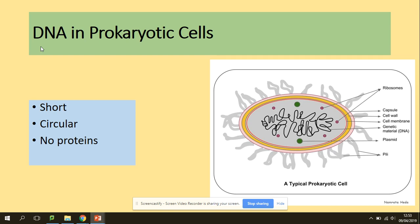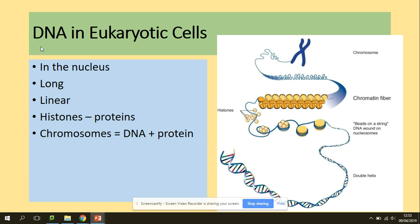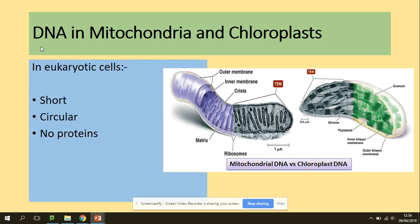Differences between DNA in prokaryotic and eukaryotic cells: in a prokaryotic cell, DNA is short, circular, and does not have histones. In a eukaryotic cell, DNA is found in the nucleus, it's long, linear, has histone proteins, and exists as chromosomes — the most condensed form of DNA. Also in the eukaryotic cell, DNA is found in the mitochondria and chloroplasts, which have characteristics like prokaryotic cells — they are short, circular, and have no histones associated with DNA.